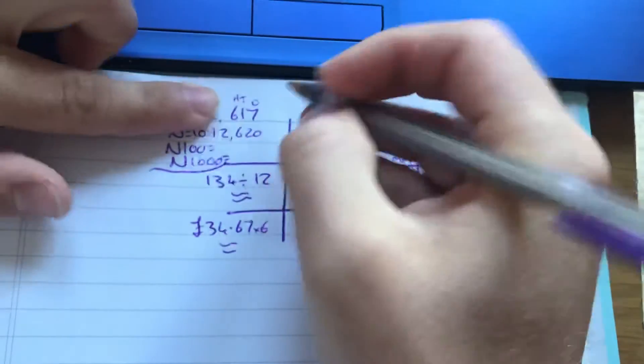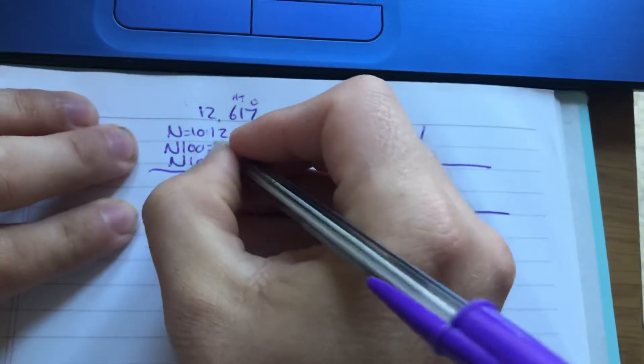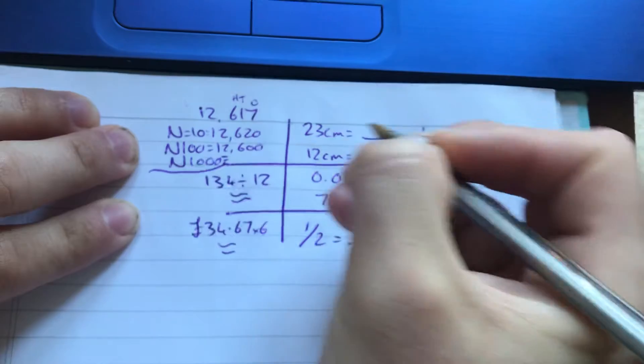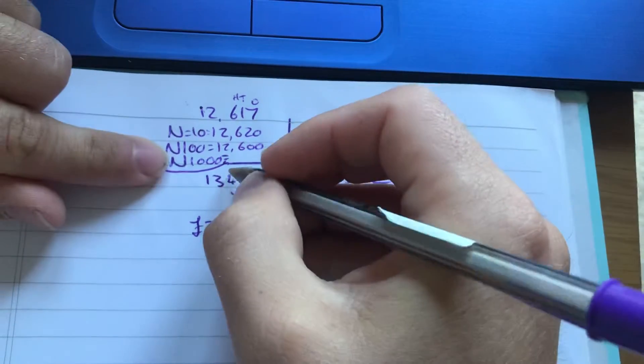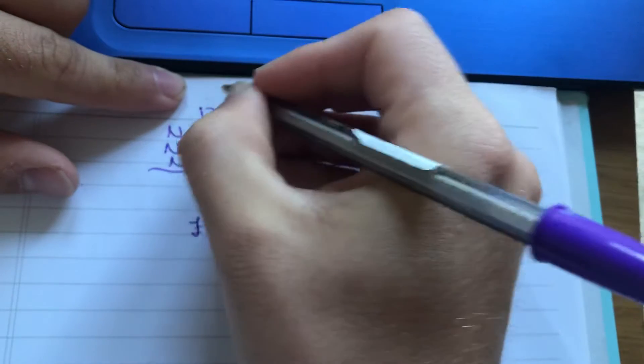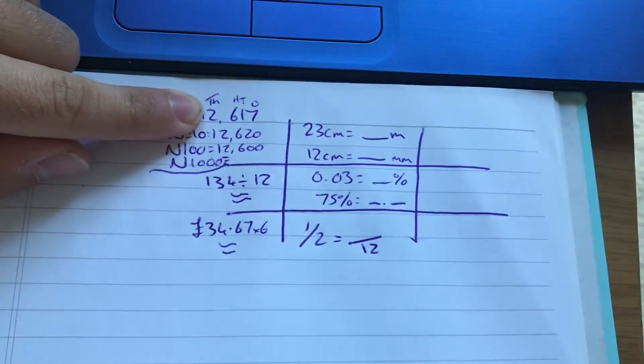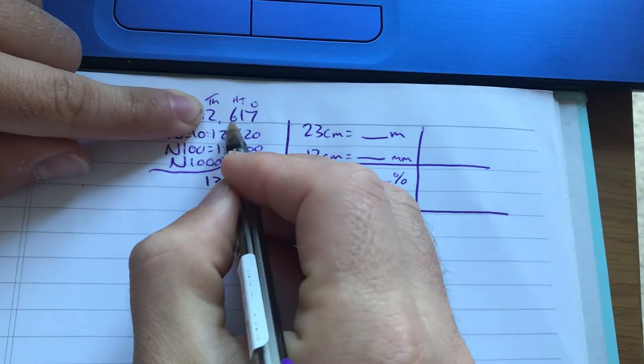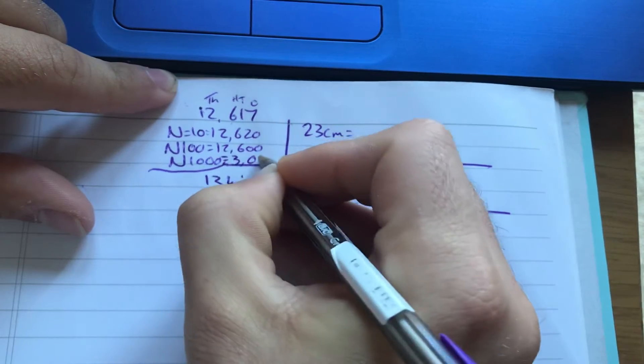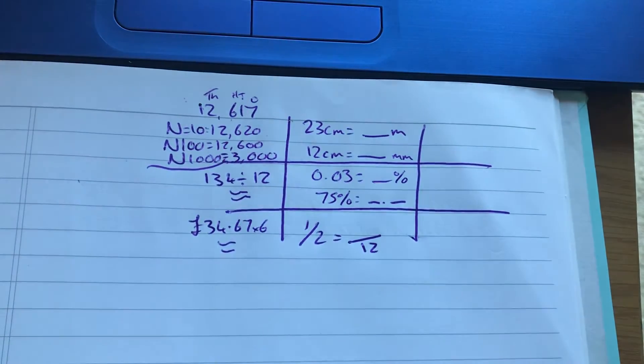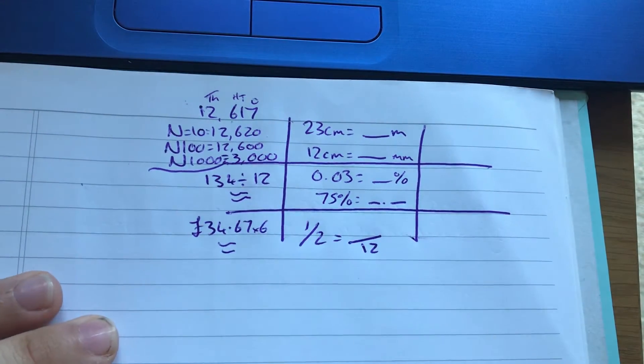Nearest hundred, well there's your hundred. So 617, well we know that's closer to 600 than 700, 12,600. Nearest thousand, well there's our thousand, 2617. Look at the number four, six, it's higher than five, so it rounds up. So it's three thousand. Sorry, I've written this really small today for some reason, I don't know why. And I've also run out of room for this question, dear me.